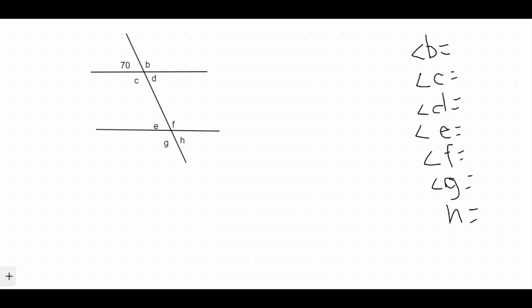We have two lines that are parallel to each other here. So these two straight lines that go side by side here are parallel to each other and we have this one diagonal line cutting through here and the diagonal line is known as the transversal.